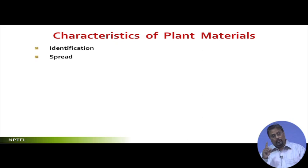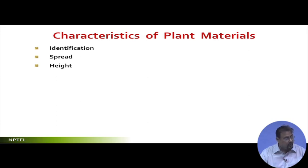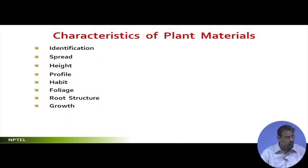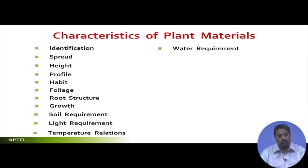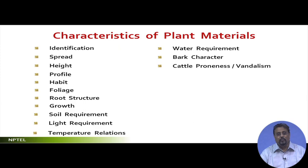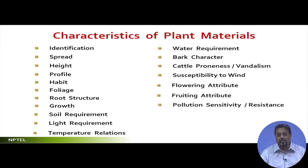Identity is the first, but the other items that follow do not come in strict order of priority. I will discuss spread, then height, then profile, then habit, then foliage, then root structure, then growth, soil requirement, light requirement, temperature relations, water requirement, bark character, cattle proneness or vandalism susceptibility, wind, flowering attributes, fruiting attributes, and pollution sensitivity or resistance.